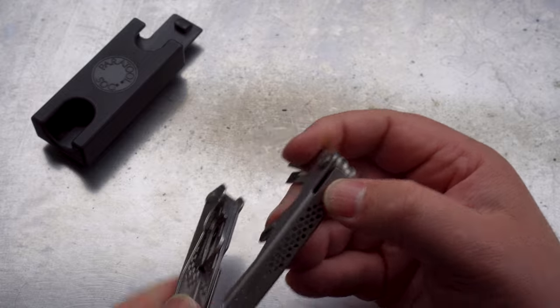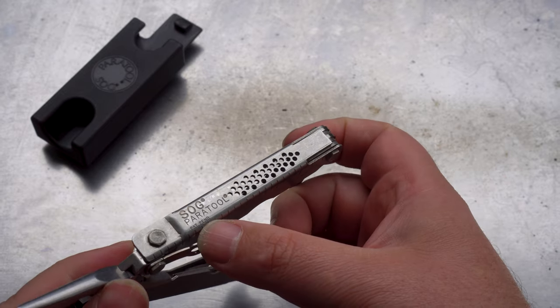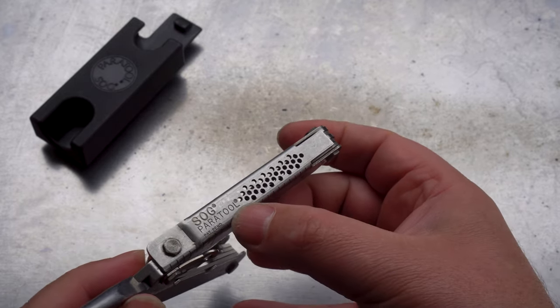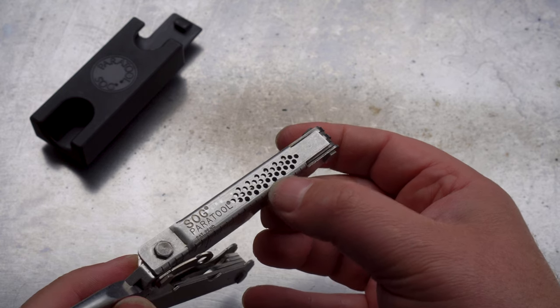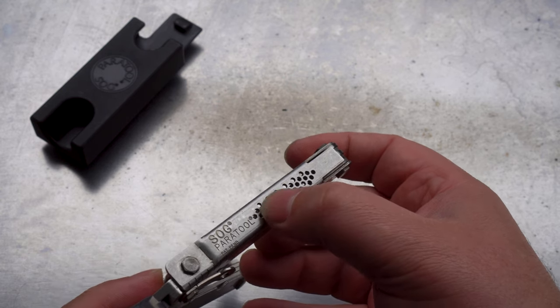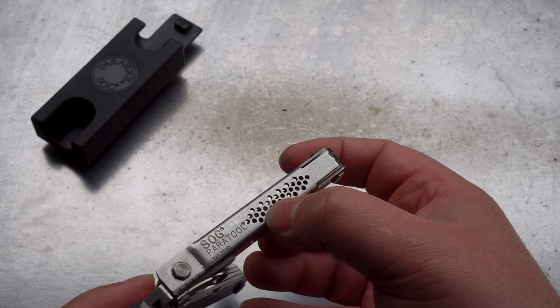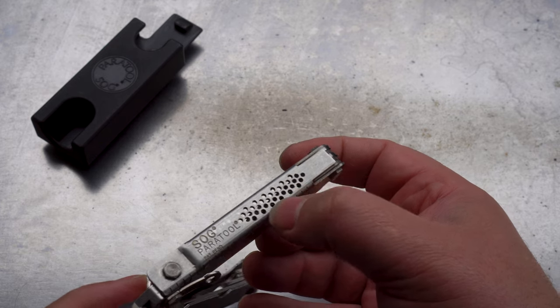All of the very early Parators had this patent pending stamp instead of a patent number, so look out for that. The very first production run also had a lot more holes cut out: one, two, three, four, and then back down to three. Keep an eye out for that as well if you're collecting.